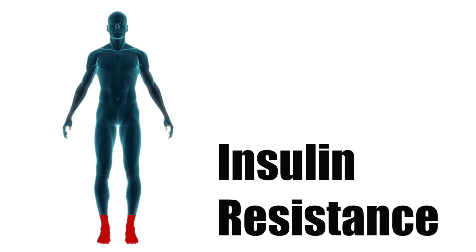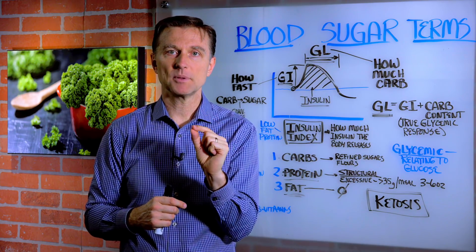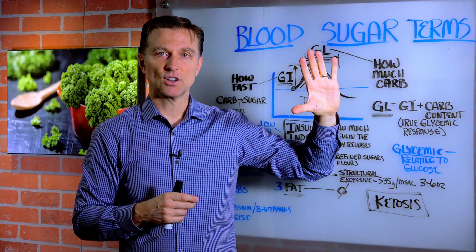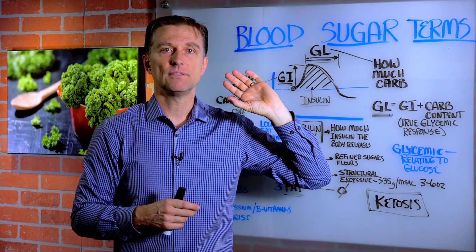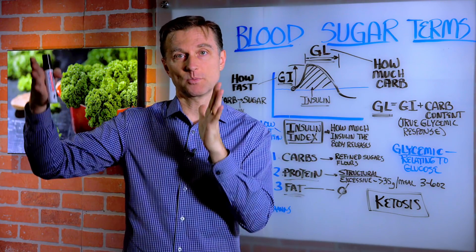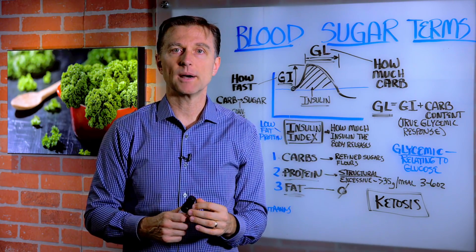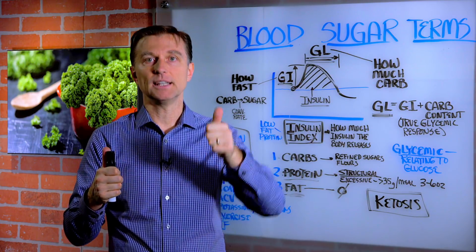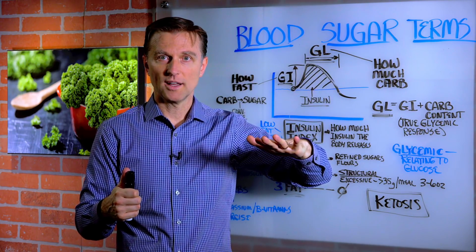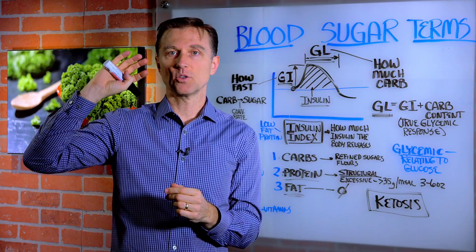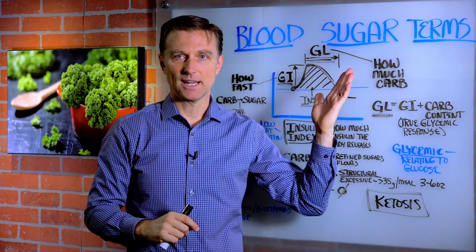With insulin resistance, over time it gets worse and worse until the body fails to compensate. Now you get diabetes — diabetes is essentially the failure to adapt to insulin resistance, which is the pre-diabetes stage. It gets worse until you can no longer control your blood sugars. Insulin resistance causes a spike in insulin that normally keeps blood sugars low, but when it starts rising higher and higher in the blood, it means it's no longer compensating. Now you're diabetic.